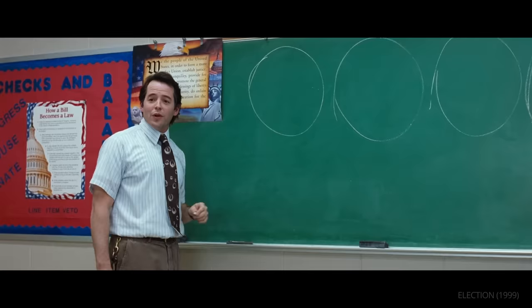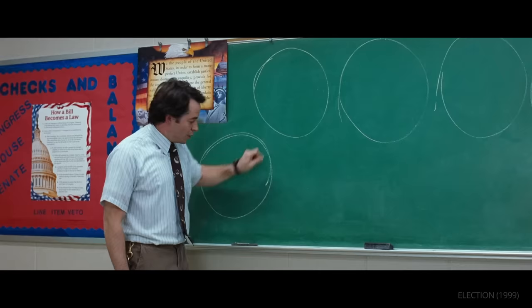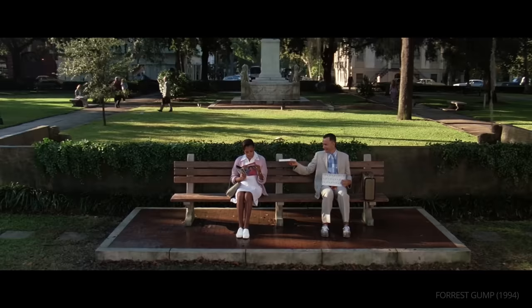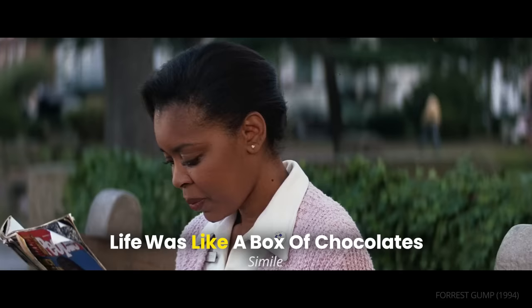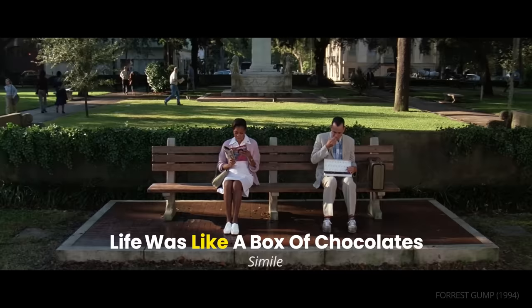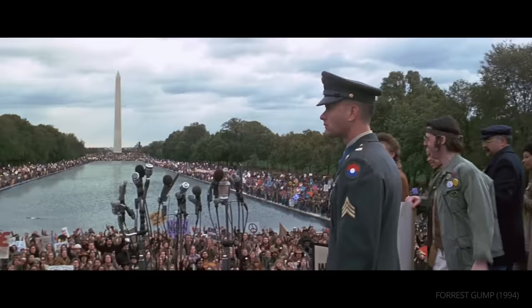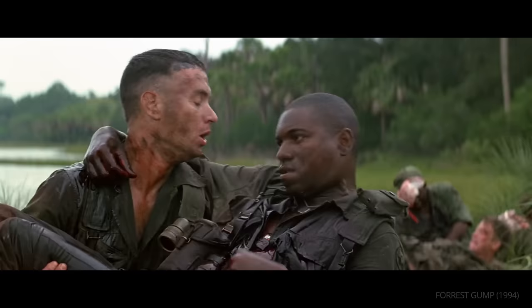When a metaphor or simile is followed by an explanation, it becomes an analogy. Forrest Gump uses an analogy to frame the entire structure of the film. Forrest starts with a simile — 'My mom always said life was like a box of chocolates' — but his explanation makes it an analogy: 'You never know what you're going to get.' The plot then follows a box-of-chocolates approach, jumping from event to event in Forrest's life, some good, some bad.